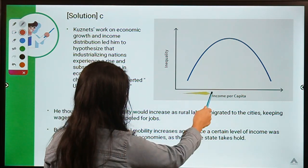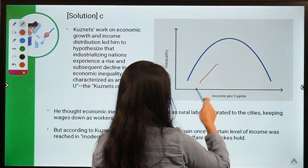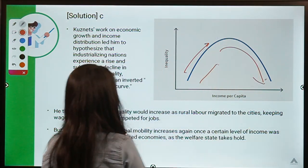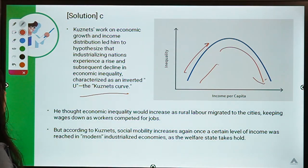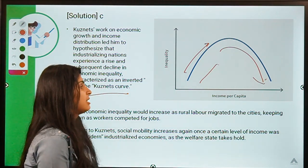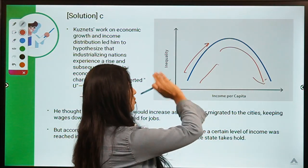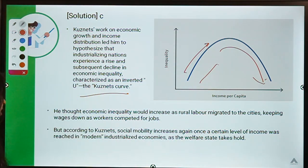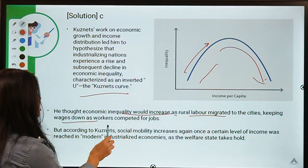With income per capita rising, inequality first rises and then goes down, making an inverted U shape — which is known as the Kuznets Curve. Kuznets initially thought that with increasing industrialization inequality must be rising, but after research he found this inverted U result. He thought economic inequality would increase as rural labor migrated to cities, keeping wages down as workers competed for jobs.